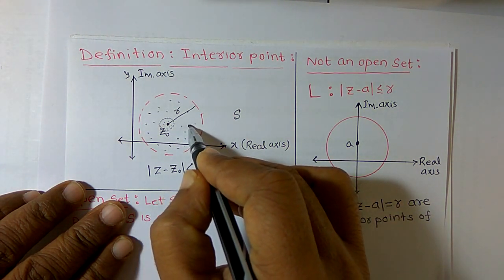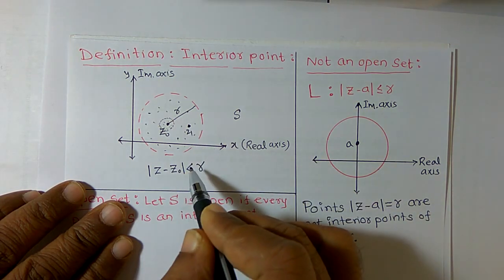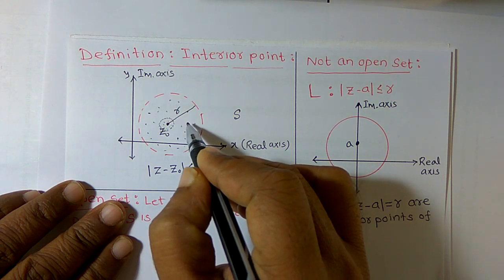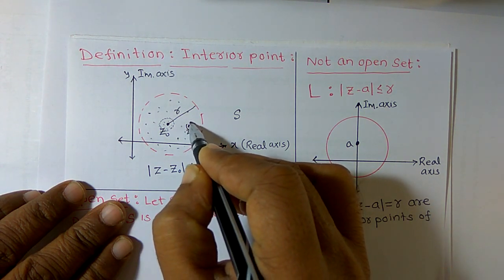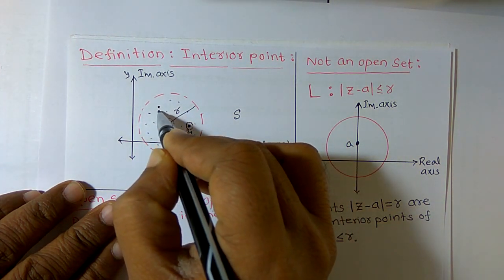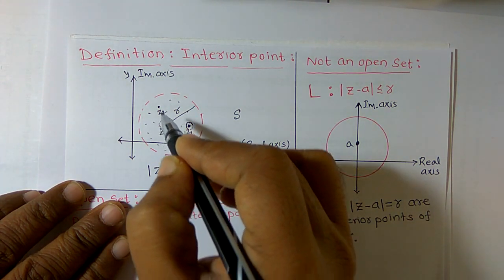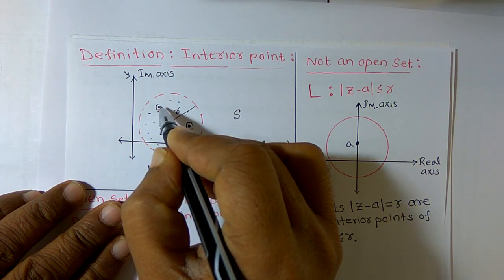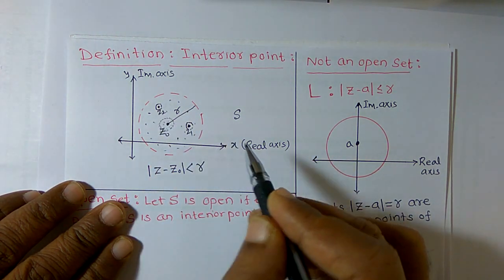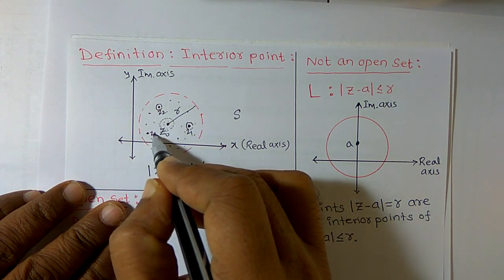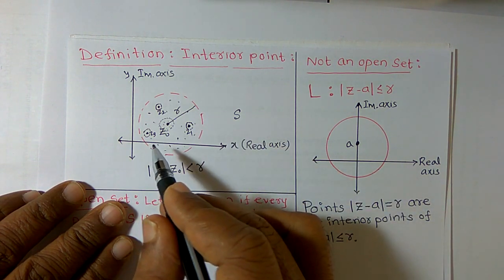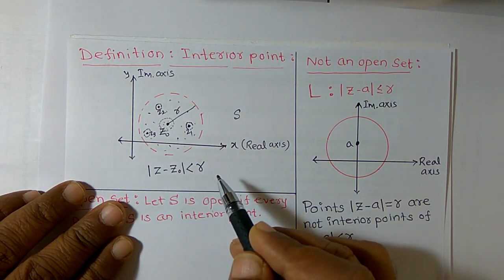Not only z0 — say for example I want to check whether z1 is an interior point. z1 is also an interior point because I can construct a small open disk around z1 and all those points belong to s. Taking another point z2, I can construct a small open disk around z2, and if all those points belong to s, then z2 is an interior point. Similarly for z3 — construct an open disk, all those points belong to s, so z3 is an interior point.